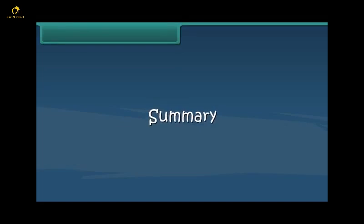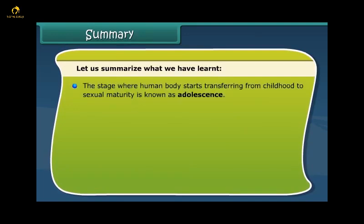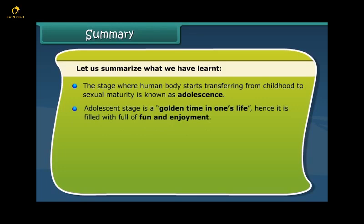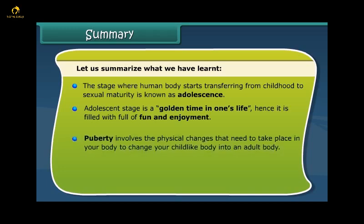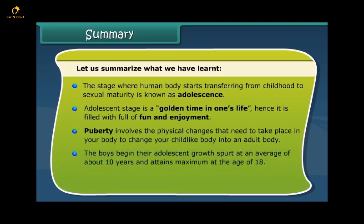Summary: the stage where a human body starts transferring from childhood to sexual maturity is known as adolescence. Adolescence is a golden time in one's life, filled with fun and enjoyment. Puberty involves the physical changes that need to take place in the body to change a childlike body into an adult body. The boys begin their adolescent growth spurt at an average of about 10 years and attain maximum height at the age of 18.